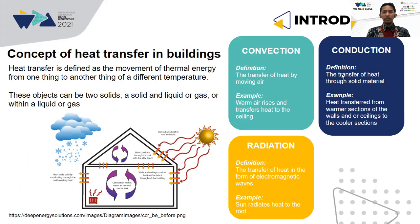Heat transfer is defined as the movement of thermal energy from one thing to another with different temperatures. This object can be two solids, a solid and liquid or gas, or within a liquid or gas. There are three types of heat transfer: convection, conduction, and radiation, with their definitions and examples as shown in the slide.